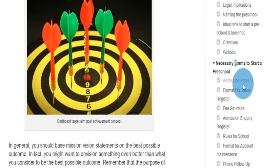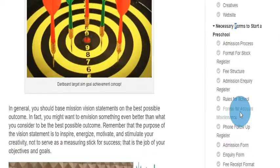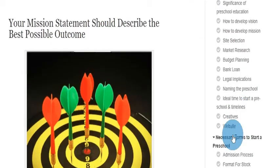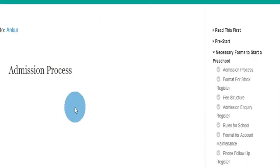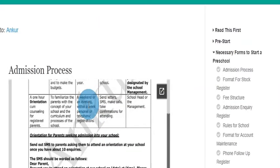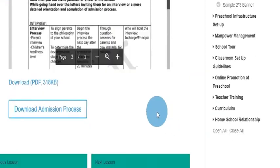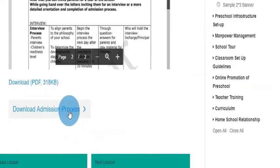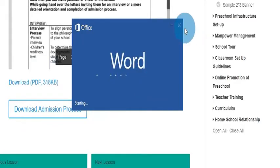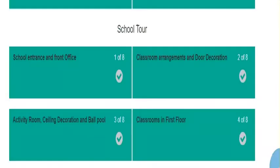We have provided all the forms that are necessary to run the preschool. Let us see the admission process form. Here you can see that we have provided the preview of the PDF. There is a download button from where you can download this form. It will open in a Word document and you can customize it according to your need.